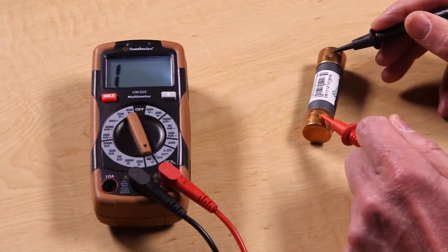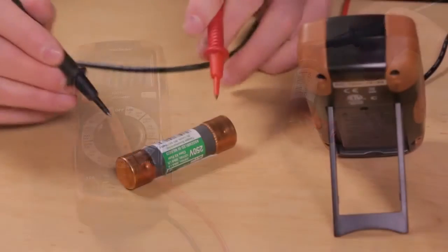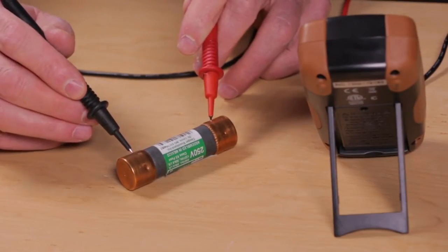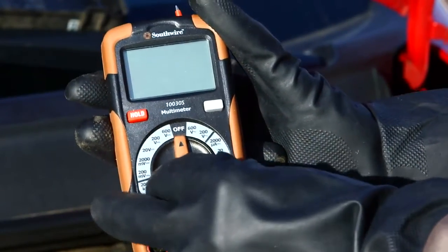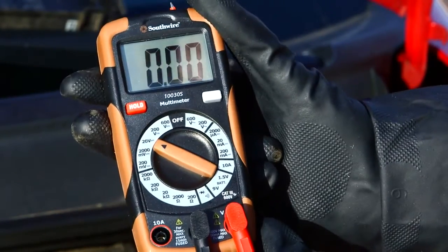A continuity beeper is also provided for quick go, no-go checks on fuses, wires, and cables. Use the rotary switch to select the proper range for your application.